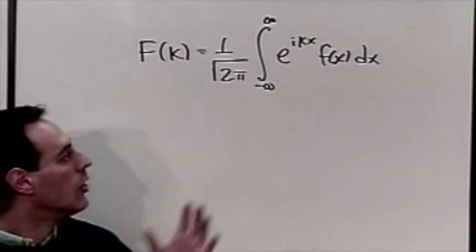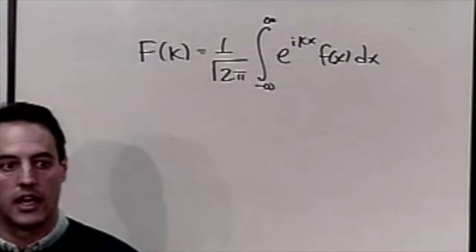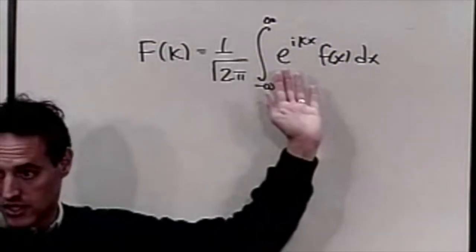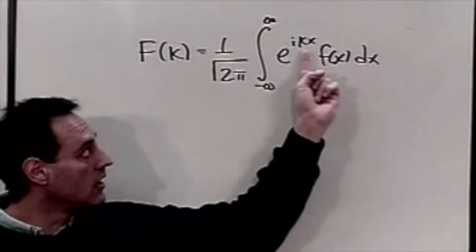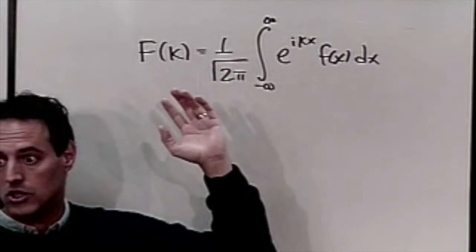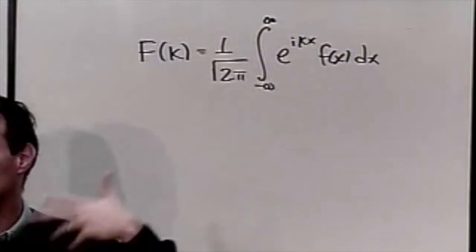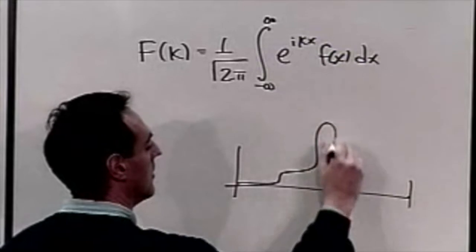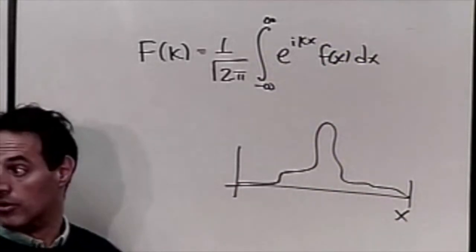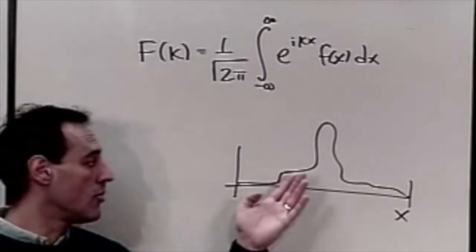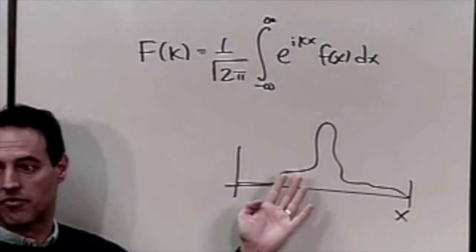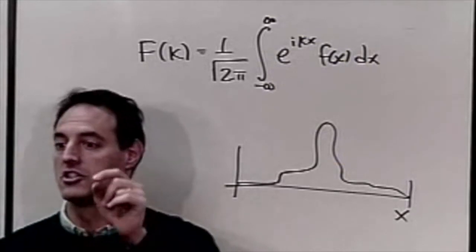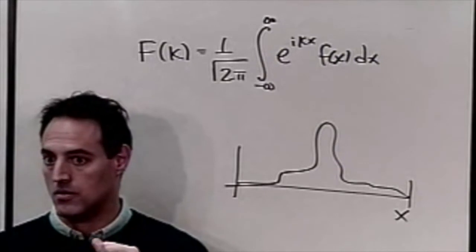What is e^(ikx)? If k and x are both real numbers, this is nothing more than cosine + i·sine. So when you integrate, you're representing the function in the space of oscillations. Wavenumber space means you decompose a spatial function into its frequency components — a sum of cosines and sines. This is Fourier's fundamental contribution to mathematics.